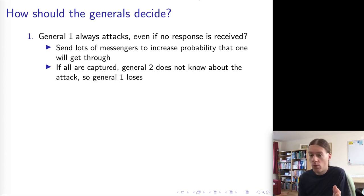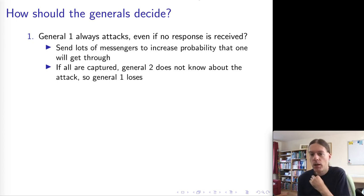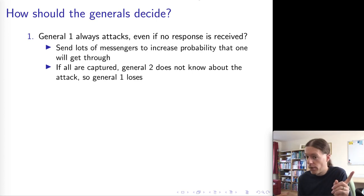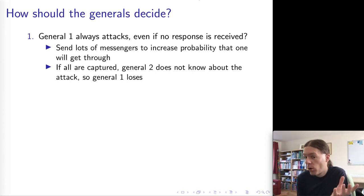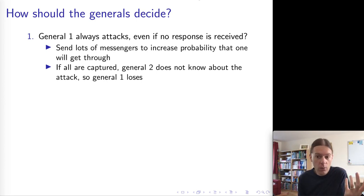Option one: general one always attacks even if no response is received. In this case, general one could send lots and lots of messengers to general two all saying 'attack at this time.' If one of those gets through, things are probably okay because general two knows that general one is always going to attack, so general two knows it's safe to go into battle even without responding. However, it could happen that all of the messengers are lost, in which case general two doesn't know about the attack and general one ends up going into battle alone and loses. So this first option is not really great.